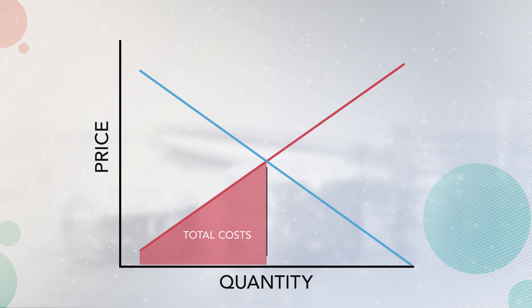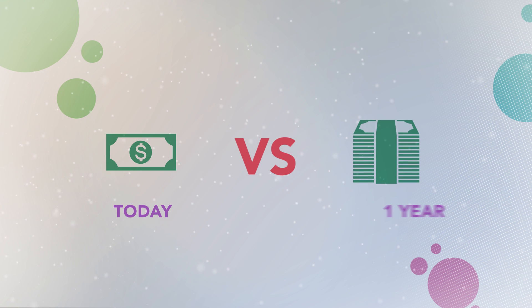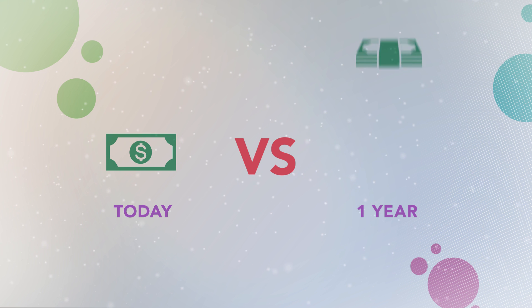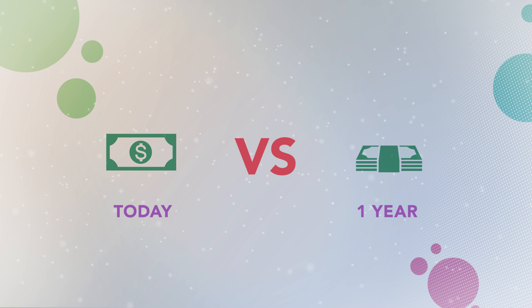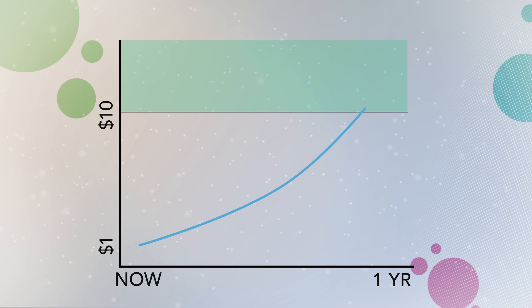Finally, they calculate the net present value of each option by aggregating all of the resulting costs and benefits together. While this process may sound fairly straightforward, there are actually many challenges to calculating an accurate net present value. For example, what if I offered you a choice between a policy that gives you $1 today versus $1,000 in a year? Most people would select the $1,000 in a year. But what if I offered you a policy that gave you $1 today versus $10 in a year? The answer becomes murkier, since you could invest that $1 now in a way that would give you a greater overall benefit.